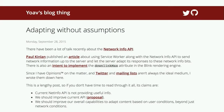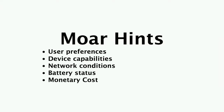Thinking about the content adaptation space more broadly: having screen resolution and image dimensions is great, but there are many more dimensions to adapt — based on user preferences, device capabilities, network conditions, battery status, and eventually monetary cost.